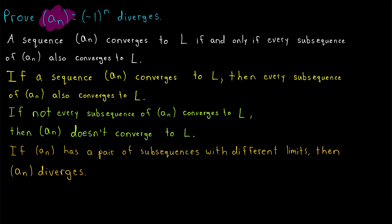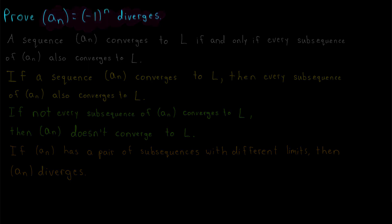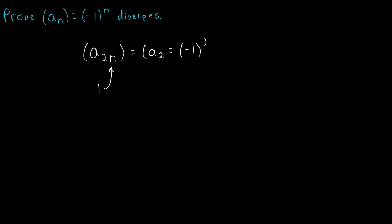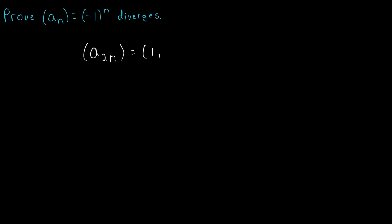With that in mind, how can we prove that this sequence diverges using subsequences? All we have to do is find two subsequences with different limits, and for this sequence there are two obvious ones. First, consider the subsequence a_{2n}. Plugging in 1 for n gives a_2, which is negative 1 to the power of 2, which is positive 1. Plugging in 2 gives a_4, which is negative 1 to the power of 4. Negative 1 to an even power is always positive 1. So this sequence consists entirely of negative 1 raised to even powers — just positive 1 after positive 1 forever.